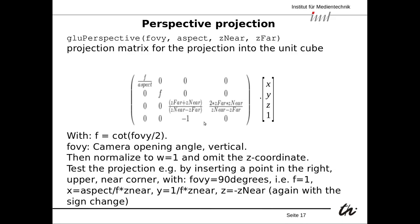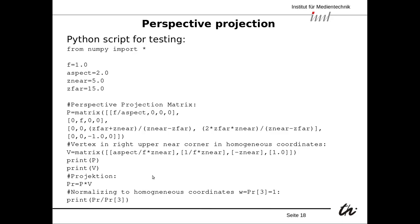It's probably easiest to just try it out to see if it works, because just looking at it it's not clear if it's actually working. We can try it out again. We test the projection by inserting a point in the right upper near corner with a field of view of 90 degrees, which means F becomes 1 — the cotangent of 45 degrees. Then we have x equals aspect divided by F times Z near, y equals 1 divided by F times Z near, and z equals Z near. Here is the Python script: F equals 1, aspect ratio is 2 — so twice as wide as high — Z near is 5, Z far is 15.